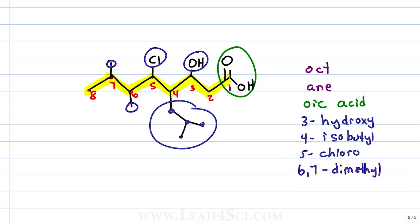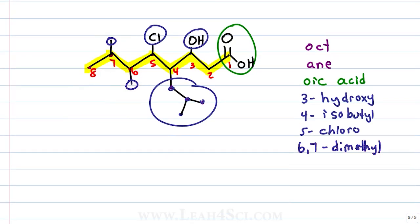So the substituents of 6 and 7 are 6 comma 7 dash dimethyl and this is why I color it up. Notice that every single group has been circled and therefore accounted for. That means nothing's going to be left out so I want to put the name together. I need to start with my substituents but I first have to put them in alphabetical order so let's see what we have to compare. I have an H for 3-hydroxy, I have an I for isobutyl, I have a C for chloro and I have an M for dimethyl.